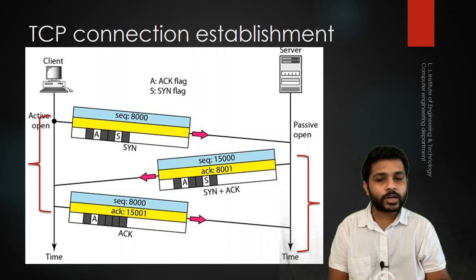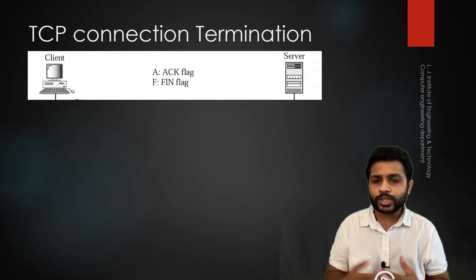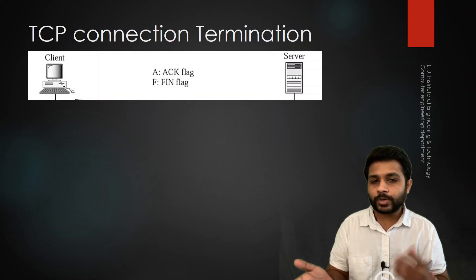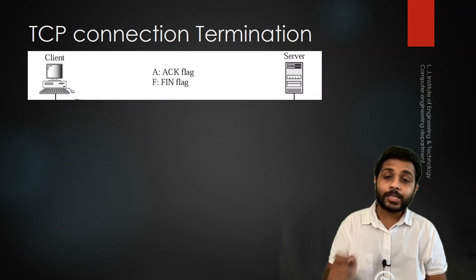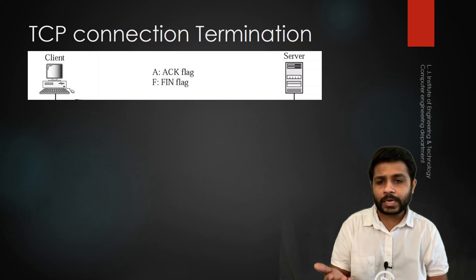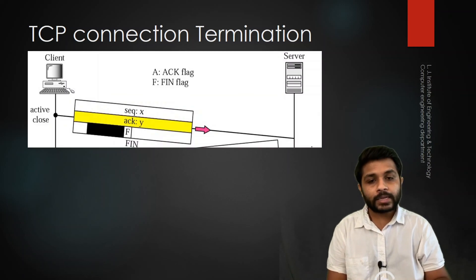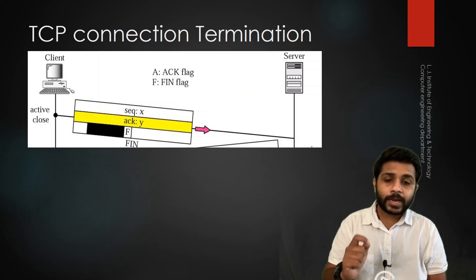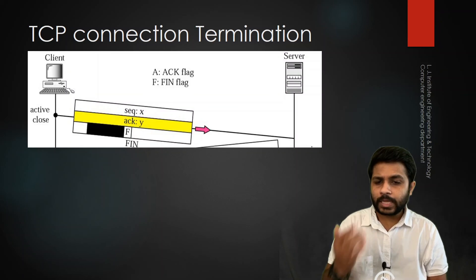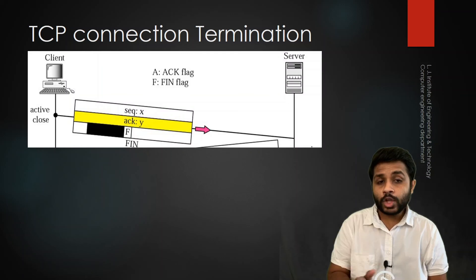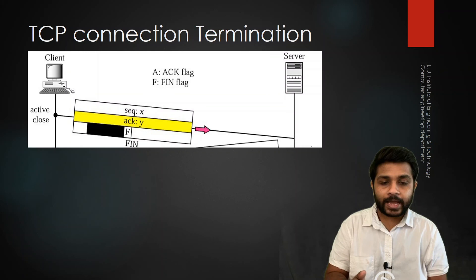For connection termination, there is a client and a server, and all the data transfer is completed. The client is no longer interested in receiving packets, so it has to close the connection it created. To close the connection, the client generates a FIN packet. In this packet there is a sequence number, an acknowledgement number, and the FIN flag set to 1. When the server receives this, it understands the client wants to close the connection.